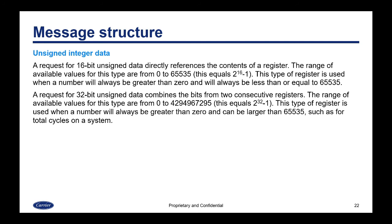A request for 32-bit unsigned data combines the bits from two consecutive registers. The range of available values is from 0 to 4,294,967,295 — about 4.5 billion — which equals 2 to the 32nd power minus 1. This type of register is used when a number will always be greater than 0 and can be larger than 65,535, and is typical for something such as total cycles on a system. It works by taking the contents of the two registers and combining all of the bits together to create one larger number.